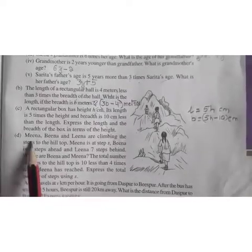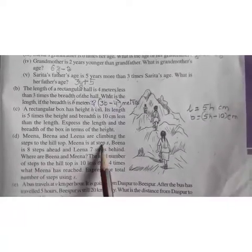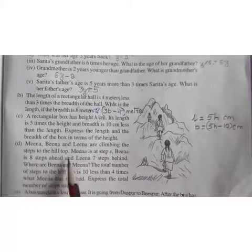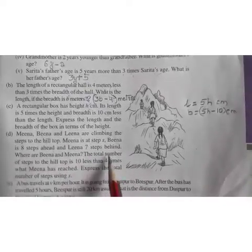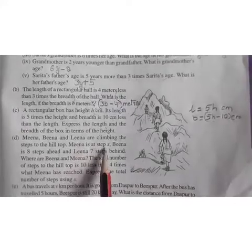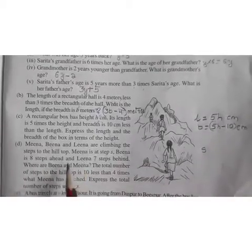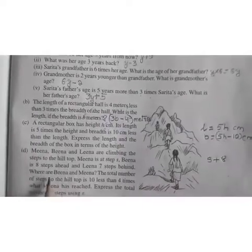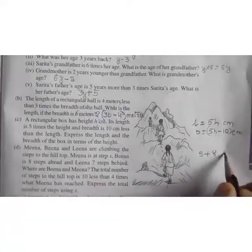Next we have question D. Mina, Bina and Lina are climbing the steps to the hilltop. Mina is at step S. Bina is 8 steps ahead, and Lina 7 steps behind. Where are Bina and Mina? First find, Mina's steps, she is at S. Bina is 8 steps ahead, that is S plus 8. So Bina is S plus 8. Next we have Lina 7 steps behind, so it will be behind means less. So S minus 7.